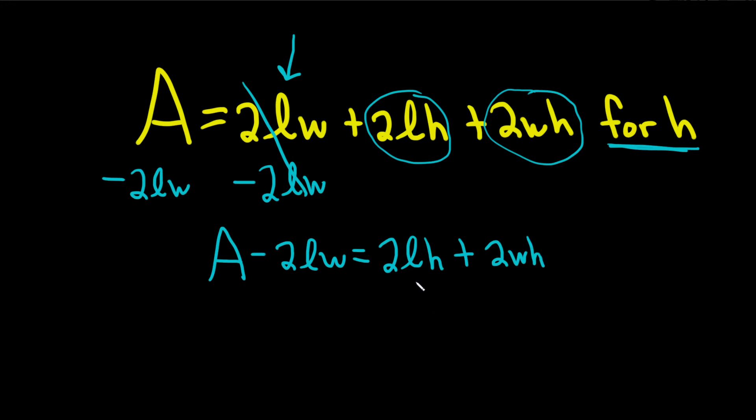We're looking for H. Each of these terms has an H, so now we can factor out an H. I'm going to go ahead and write down this side again: A minus 2LW, just to carry it through.